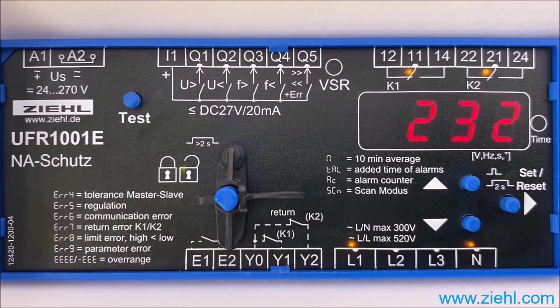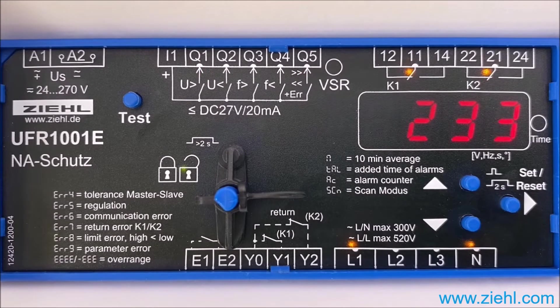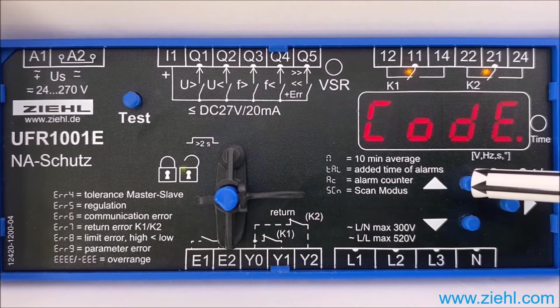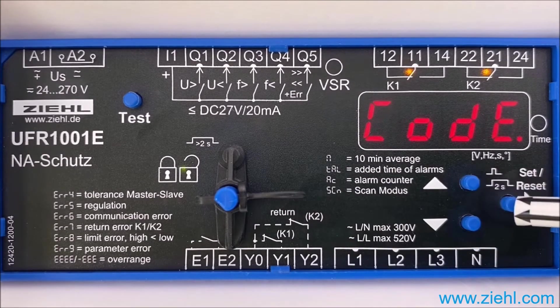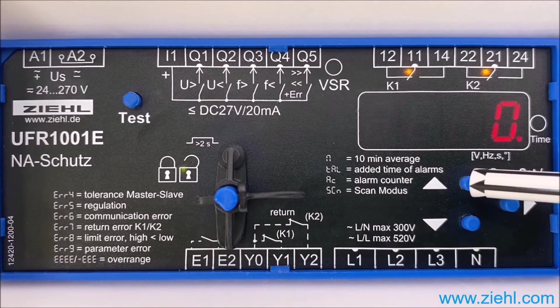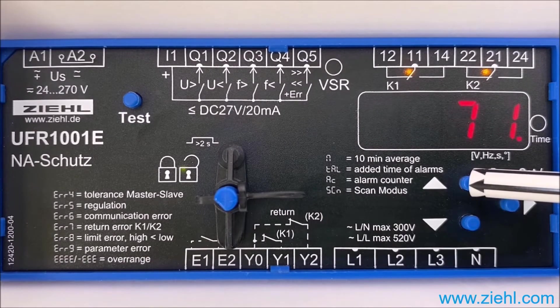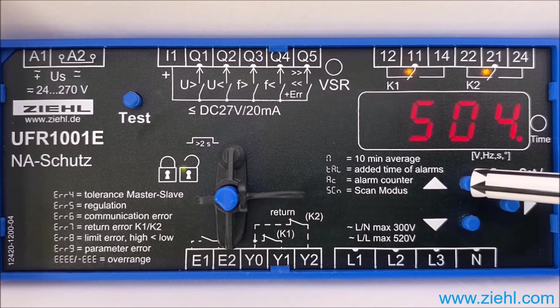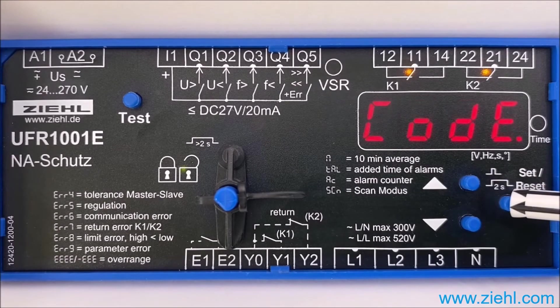The code lock can be switched off as follows. Starting from the display mode, push upwards twice to code. Push set once and now enter the pin with up or down. The pin 504 is set at the factory, so push the key up until the actual code is displayed and confirm with set.